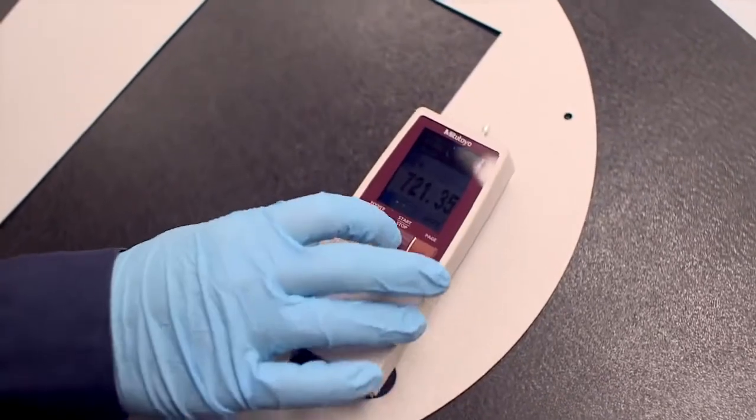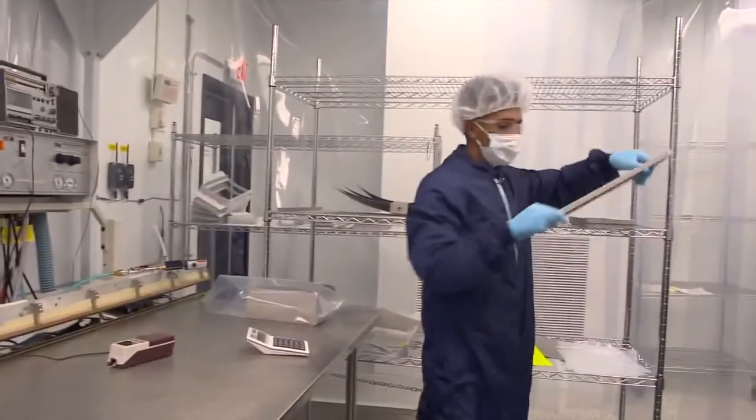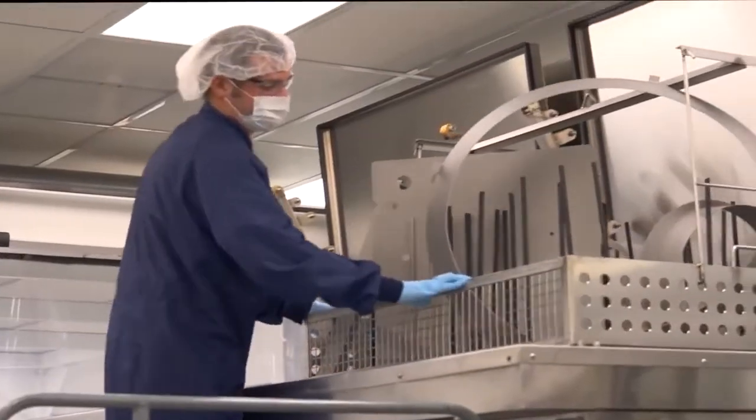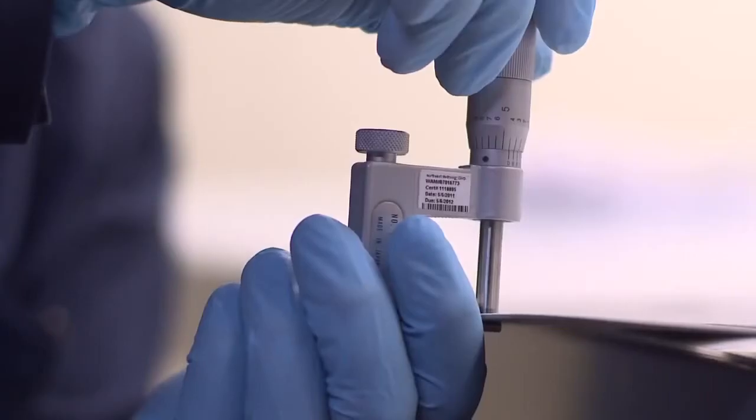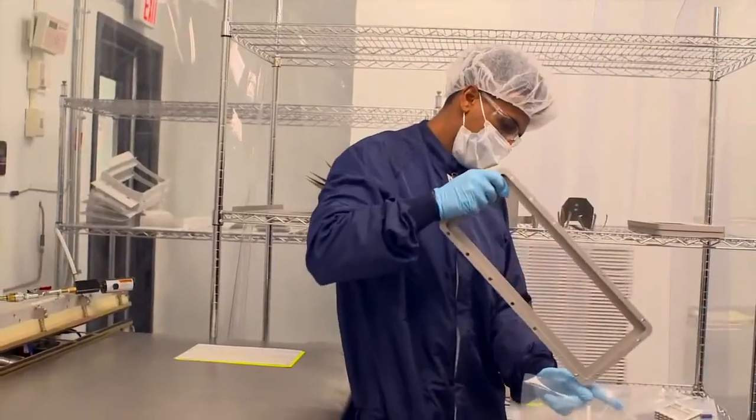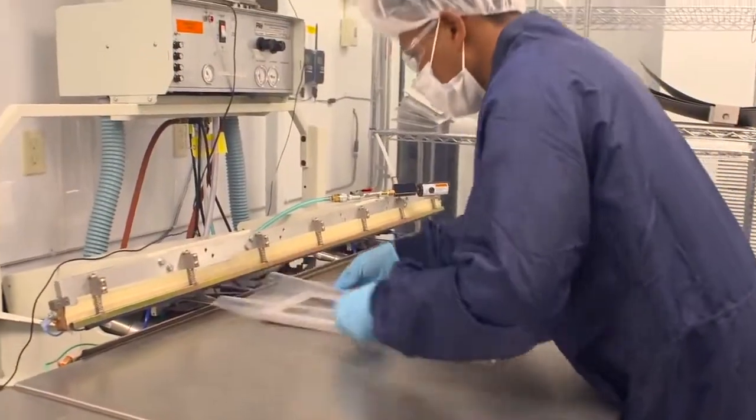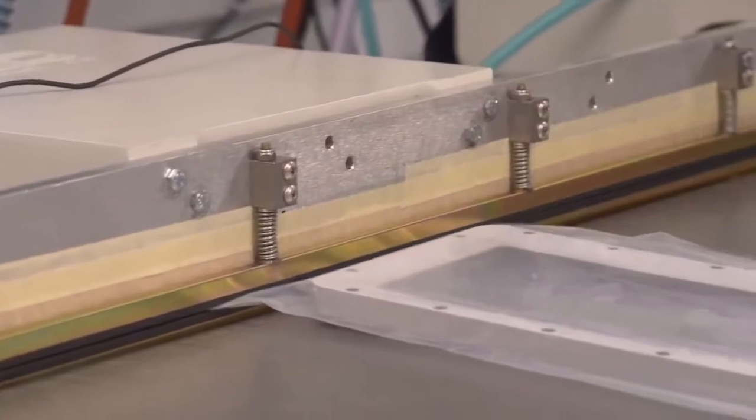Applying the surface coating isn't the end of the process. All parts undergo final cleaning in our Class 10,000 clean room and are inspected and tested to ensure dimensional tolerances. This means your parts will be ready to be installed into thin film chambers as soon as you receive them.